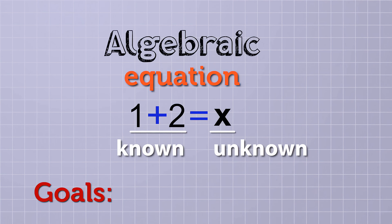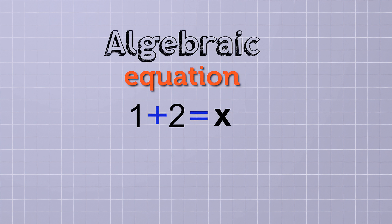One of the main goals in algebra is to figure out what the unknown values in equations are. And when you do that, it's called solving the equations. In this equation, it's pretty easy to see that the unknown value is just 3. All you have to do is actually add the 1 and 2 together on this side of the equation, and it turns into 3 equals x, which is the same as x equals 3. So now we know what x is. It's just 3.